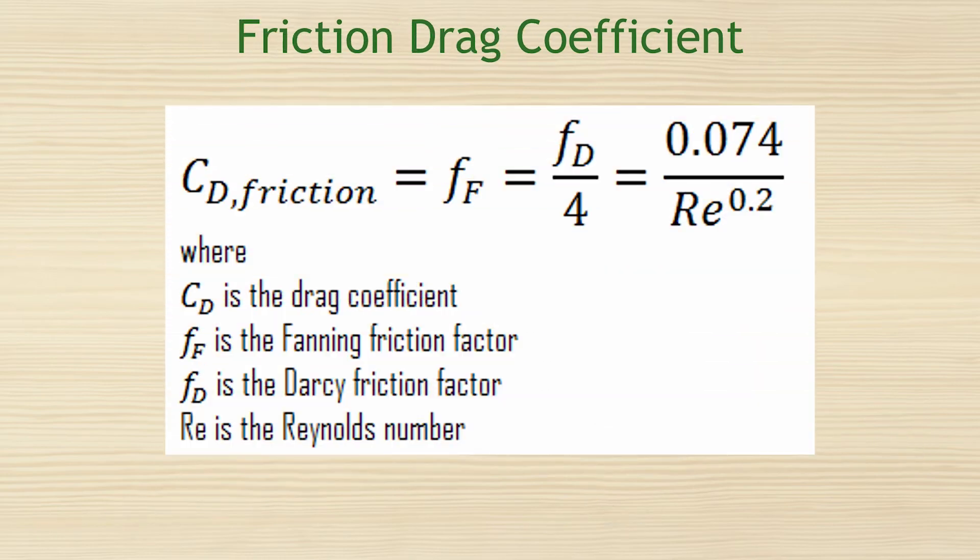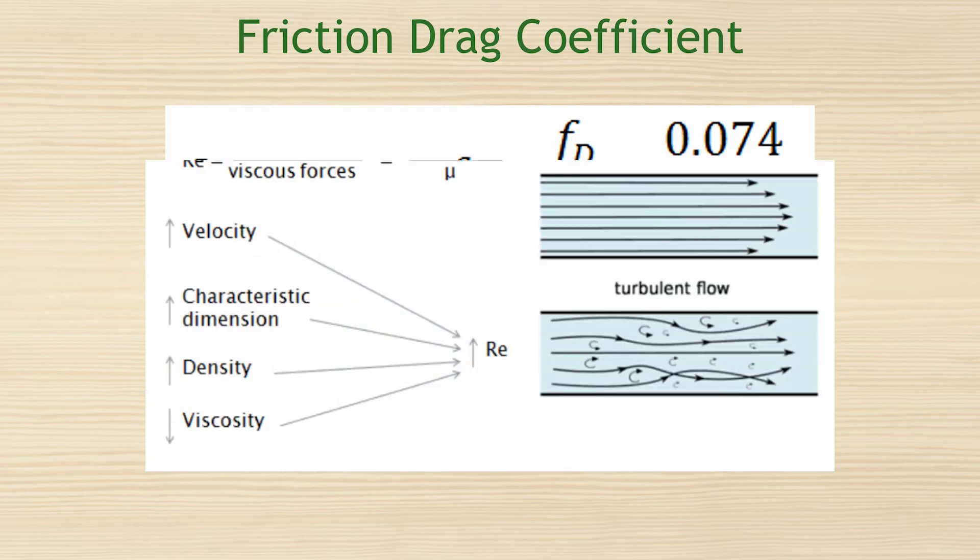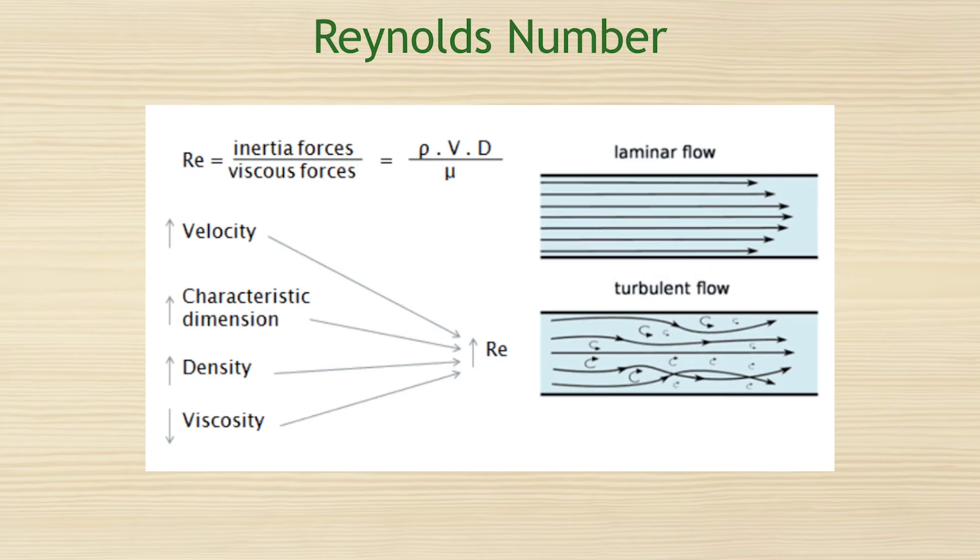The friction drag coefficient is used to characterize the friction drag brought on by shear stresses. For defining the flow processes for forced flows, the Reynolds number is a dimensionless similarity parameter. When it comes to objects surrounded by the flow, the characteristic length X used to get the Reynolds number is equal to the length of the object's direction of the flow.